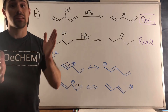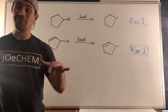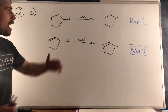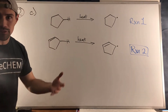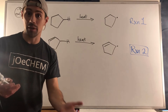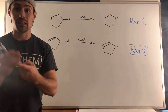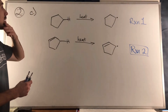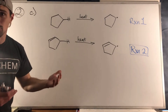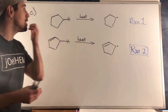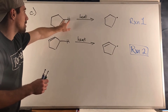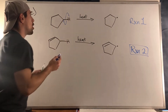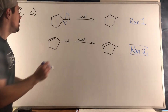That does it for problem two — let's head into part C. Same format: two reactions, and we can clearly see the difference. In one situation we're going to produce an allylic radical — adjacent to a double bond. If we have extreme heat in a thermal cracking process, we crack the C–H bond, with one electron going to hydrogen and the other going to carbon. I'm using a single-headed arrow to show one electron moving.